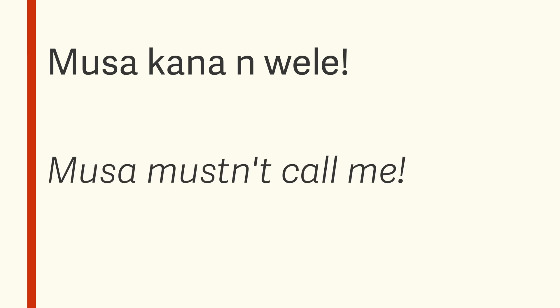Optative sentences can all be made negative by simply switching ka to kana, though finding a single one-to-one English translation can be tricky. One possibility is 'mustn't.' For instance, 'musa kana un wele,' meaning 'Musa mustn't call me,' or more colloquially 'Musa had better not call me.' When using kana with the second person pronouns i (you) and au (you all), the best colloquial translation is sometimes a simple imperative. For instance, 'i kana un deme,' meaning 'you mustn't help me,' or more colloquially, 'don't help me.'